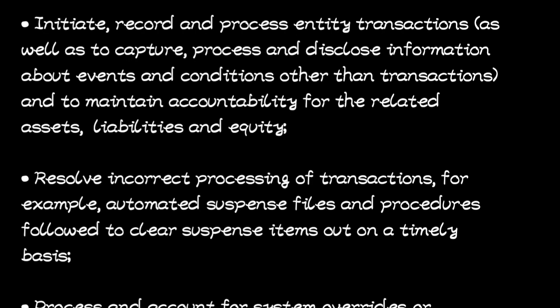The information system can be either manual or automated. Secondly, there must be activities or policies that resolve incorrect processing of transactions — there must be ways of correcting things. For example, automated suspense files and procedures followed to clear suspense items on a timely basis, so that in case something goes wrong, there is a way of correcting it before it's too late.